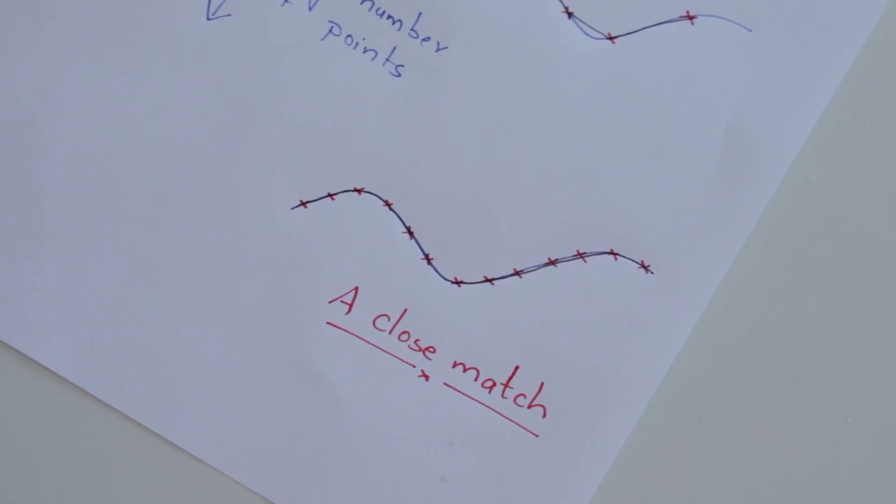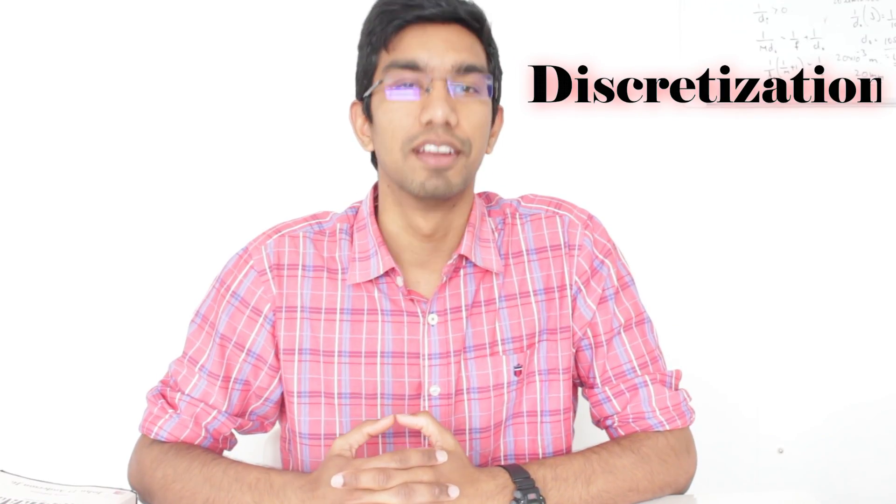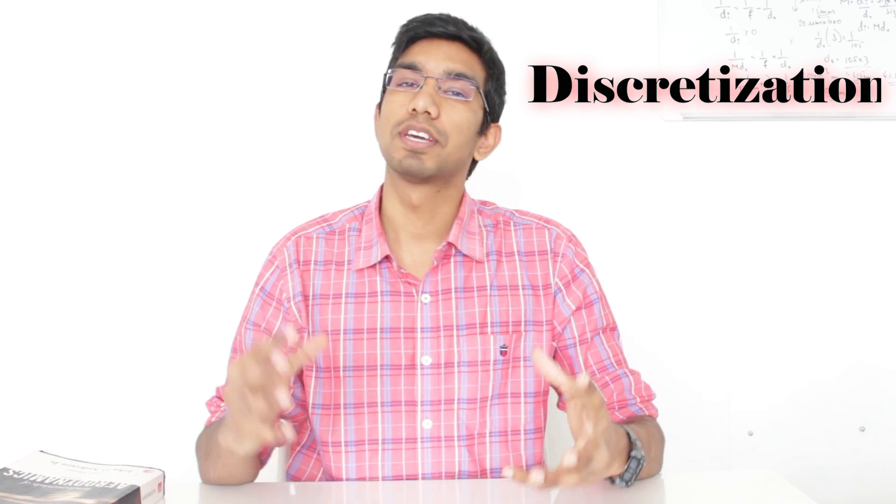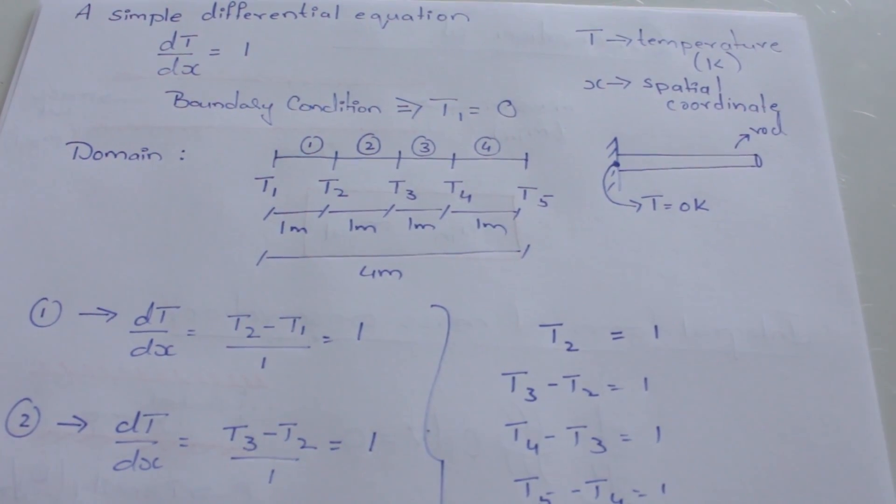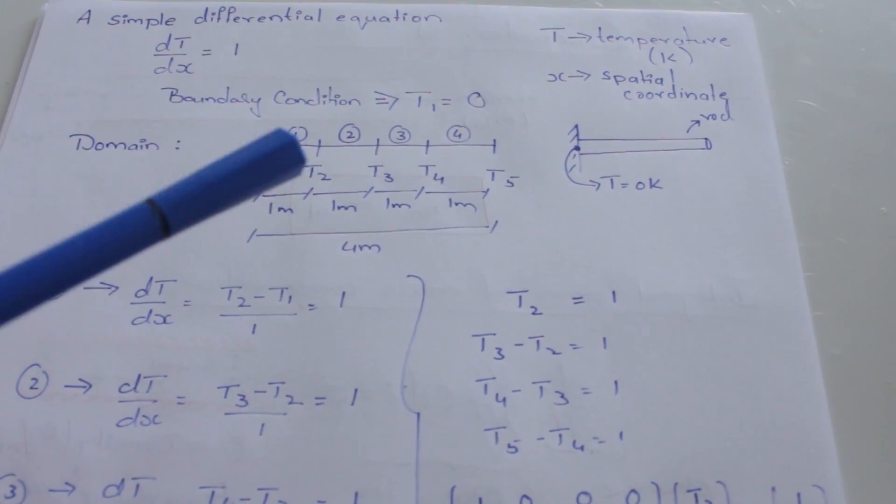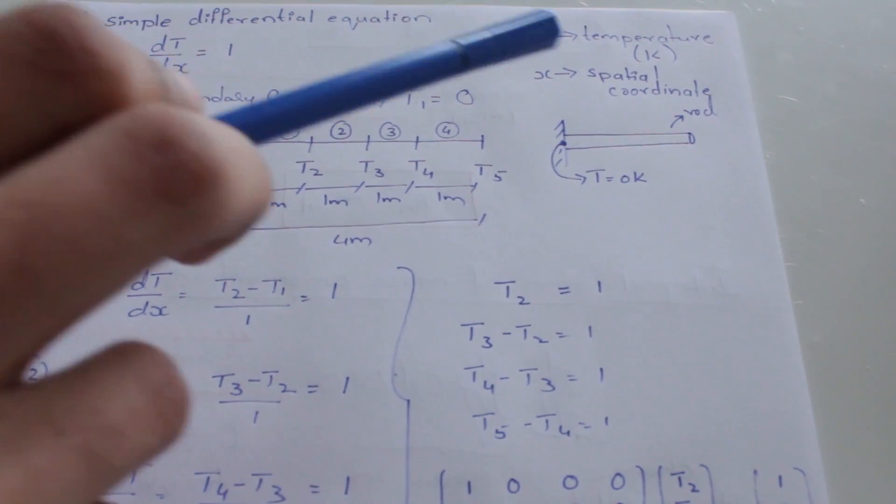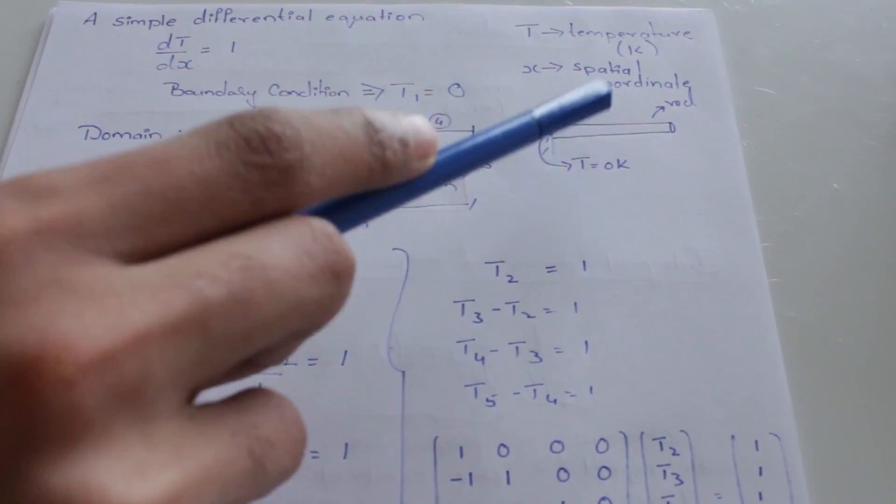So if you don't discretize your problem sufficiently, then you can't expect to get good results. The next step is quite literally the essence of what makes CFD, CFD. Remember how we said that solving the complete set of Navier-Stokes equations is impossible? Well, how about we convert those set of partial differential equations into a system of linear algebraic equations? Let us consider we have a rod where one end is at zero Kelvin. If we want to find the distribution of temperature at different points along the rod, we need to know the differential equation which governs the physics. For simplicity, let us consider that the differential equation dT by dx is equal to 1 governs the temperature distribution along this rod, with T1 is equal to 0 being the boundary condition.